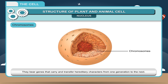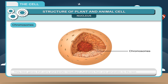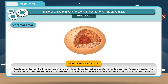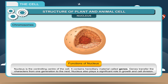Chromosomes bear genes that carry and transfer hereditary characters from one generation to the next. Functions of nucleus: Nucleus is the controlling center of the cell. It contains hereditary material called genes. Genes transfer the characters from one generation to the next. Nucleus also plays a significant role in growth and cell division.